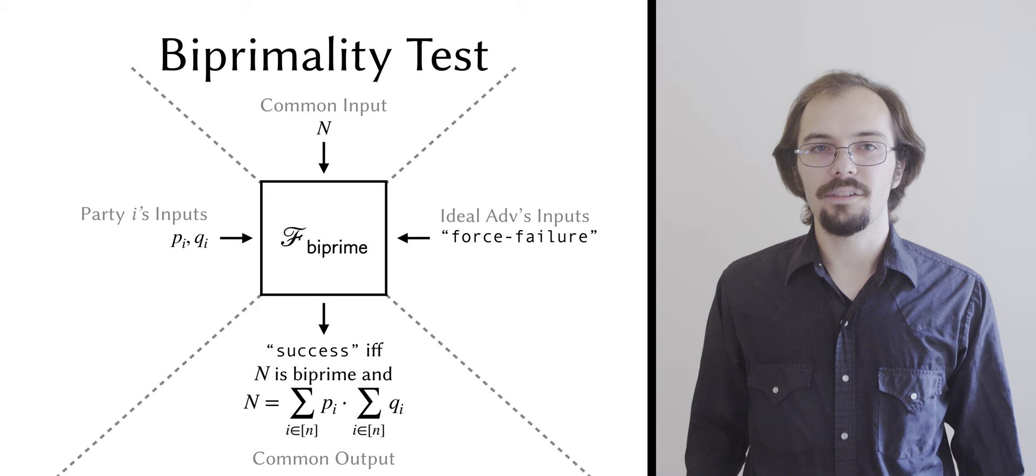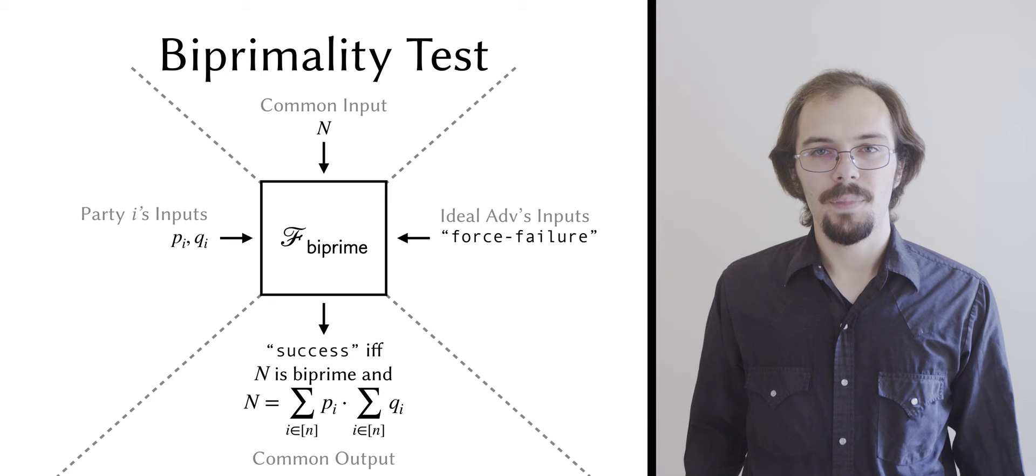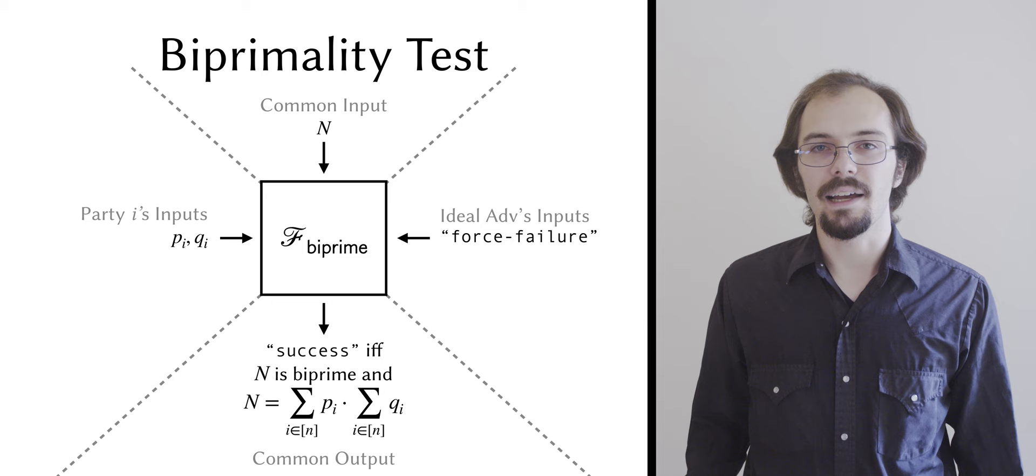Notice, however, that if n really is a biprime, then there are only two possible pairs of factors p and q that would make the functionality succeed. One follows from the honest protocol execution, and we show that finding the other is as hard as factoring n. This is an important and subtle case that is essential to our simulation argument.